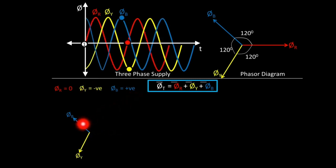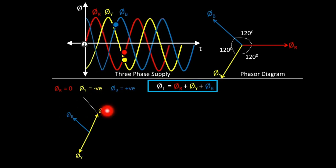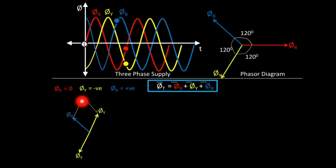In the original phasor, the phasor always has a positive direction. So if φY is positive in the original phasor but its value is negative, we just extend it in the opposite direction to get −φY. Now we can add −φY and +φB. For that, we draw the parallelogram — one line from the endpoint of −φY parallel to φB, and one more line from the endpoint of φB parallel to −φY. The point of intersection connected from the origin gives us the phasor of total flux φT for instant 1.